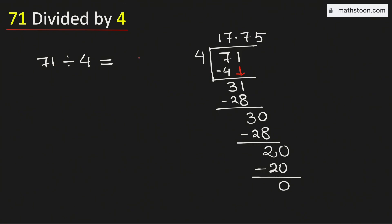Therefore, 71 divided by 4 is equal to 17.75. And this is our final answer.